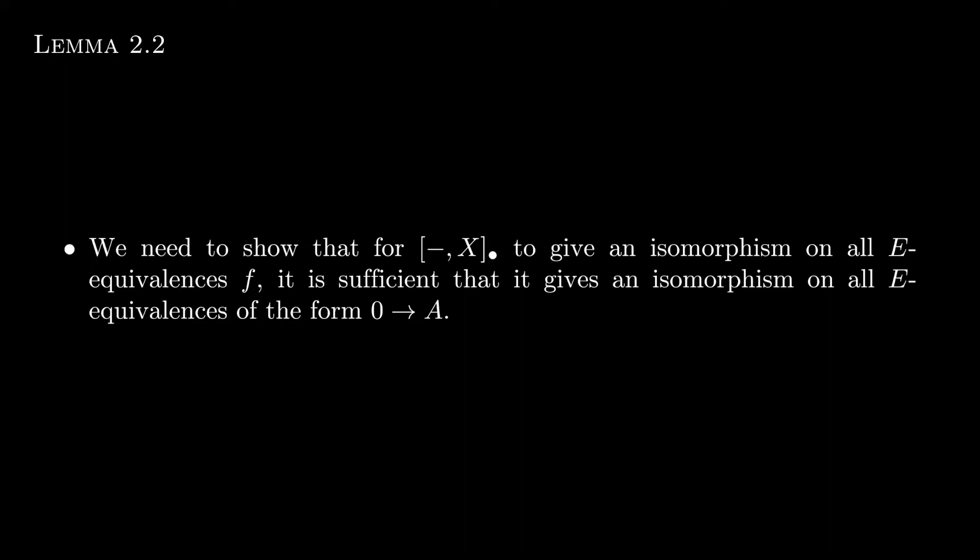Really, this is the more remarkable result. In other words, we want to show that in order for f_X bar to be an isomorphism for all E-equivalents as f, then it is enough to show that f_X bar is an isomorphism for all E-equivalents just of the form 0 to Y. This is because each E-equivalents of the form 0 to Y corresponds to an E-acyclic spectrum Y. So let's get down to the proof.